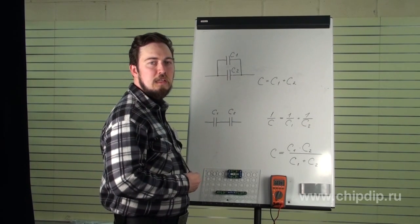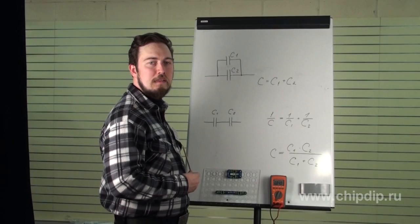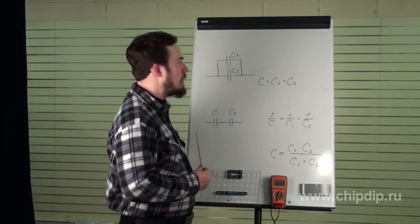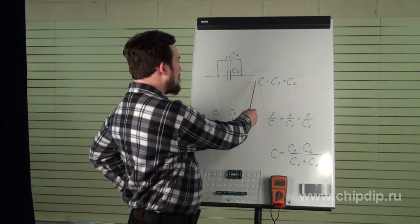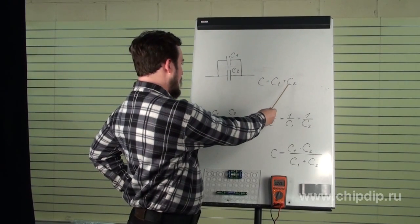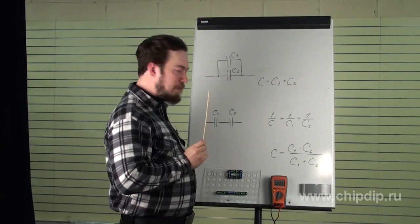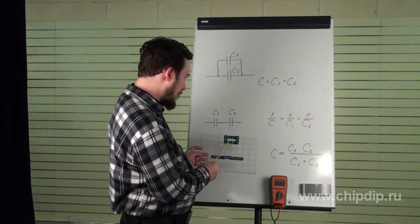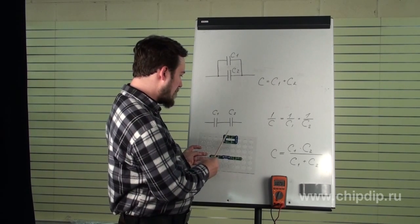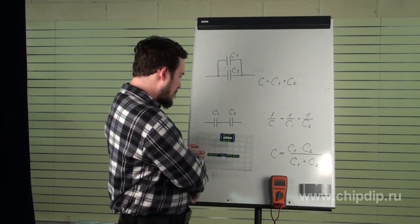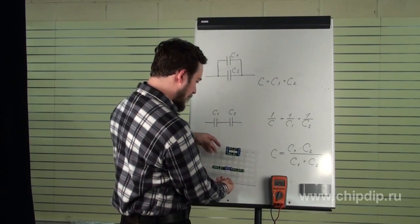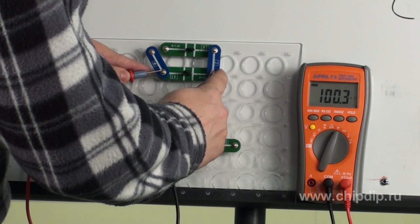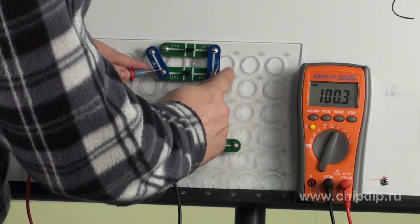When the capacitors are connected in parallel, the total capacitance will be equal to the sum of the individual capacitances. C equals C1 plus C2. For example, if we take two capacitors with the capacitance of one microfarad each and connect them in parallel, the total capacitance will amount to 2 microfarad. In this case, the voltage between the plates of all the capacitors will be the same.